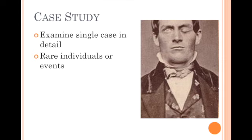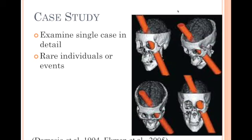Phineas Gage was a railroad supervisor in the 1800s who unfortunately had a three-foot-long iron tamping rod sparked by some dynamite blown through his cheek behind his eye. You can see his eye is closed in the picture. This is a computer-generated reconstruction — you can see the iron tamping rod went up behind his eye and out the top of his head. These kinds of unusual cases tell us something about the events that lead to psychological change.